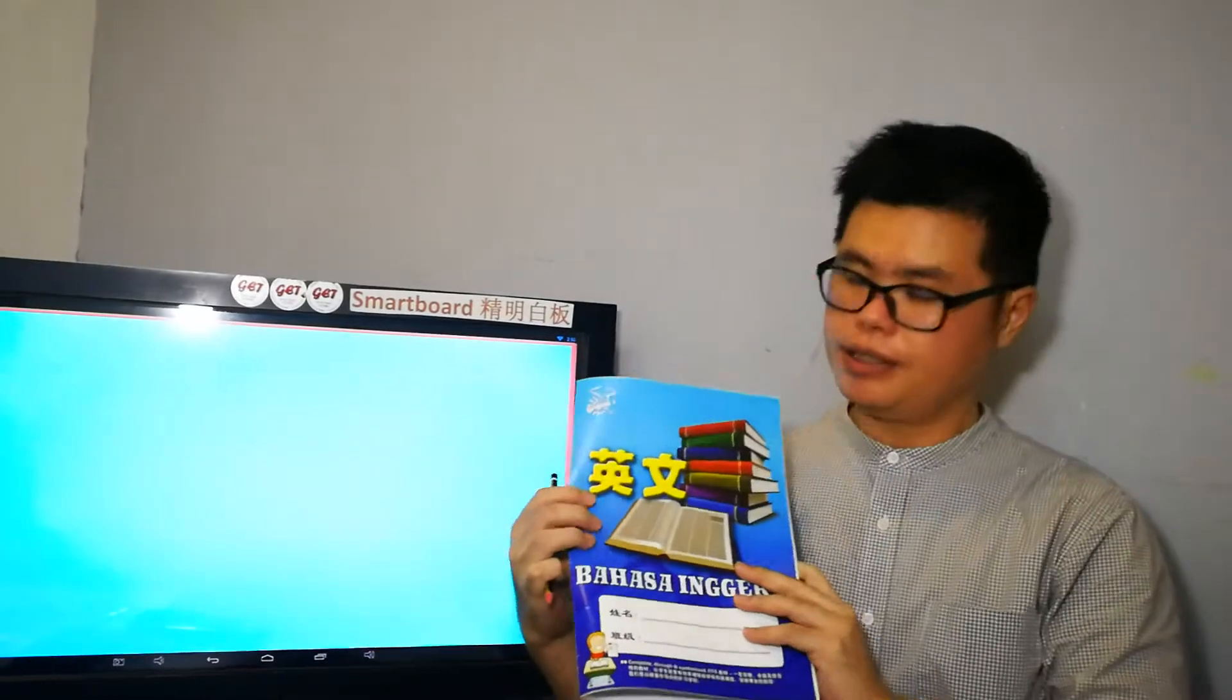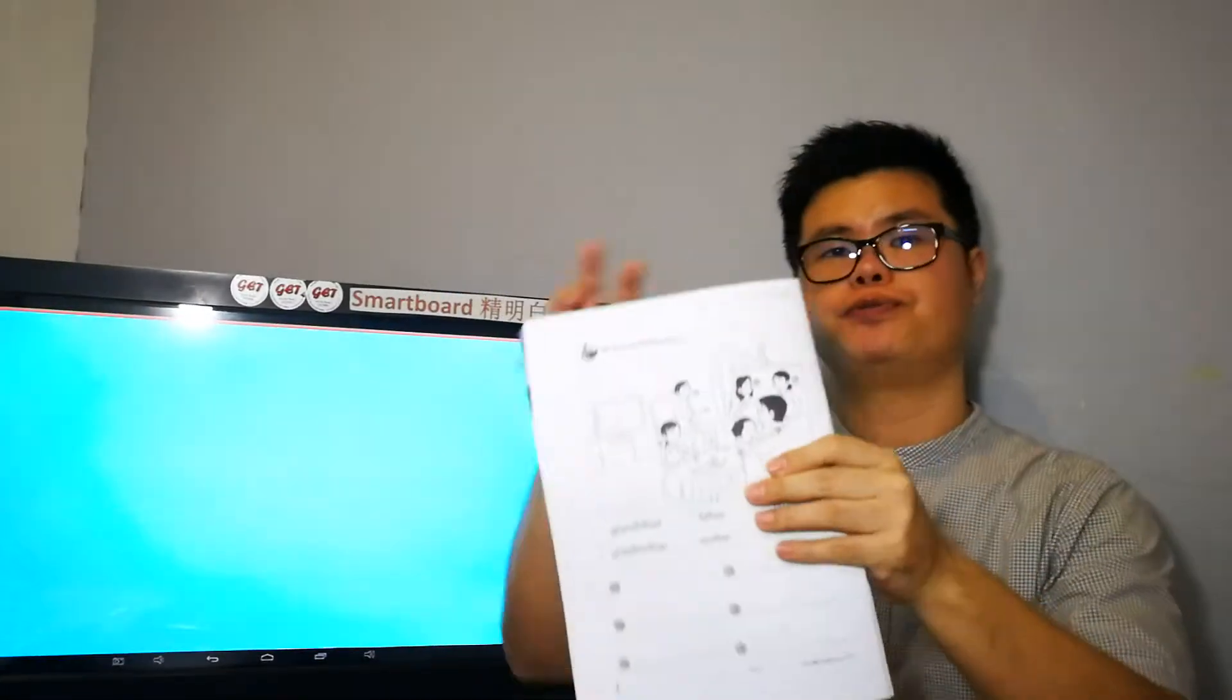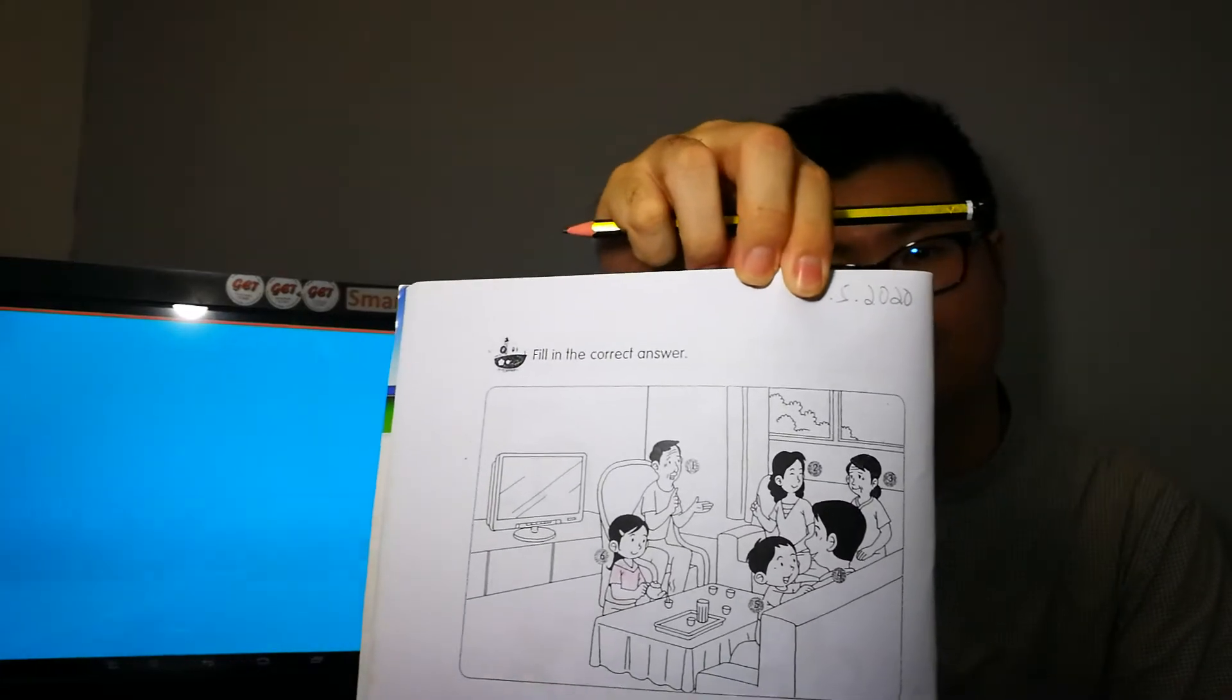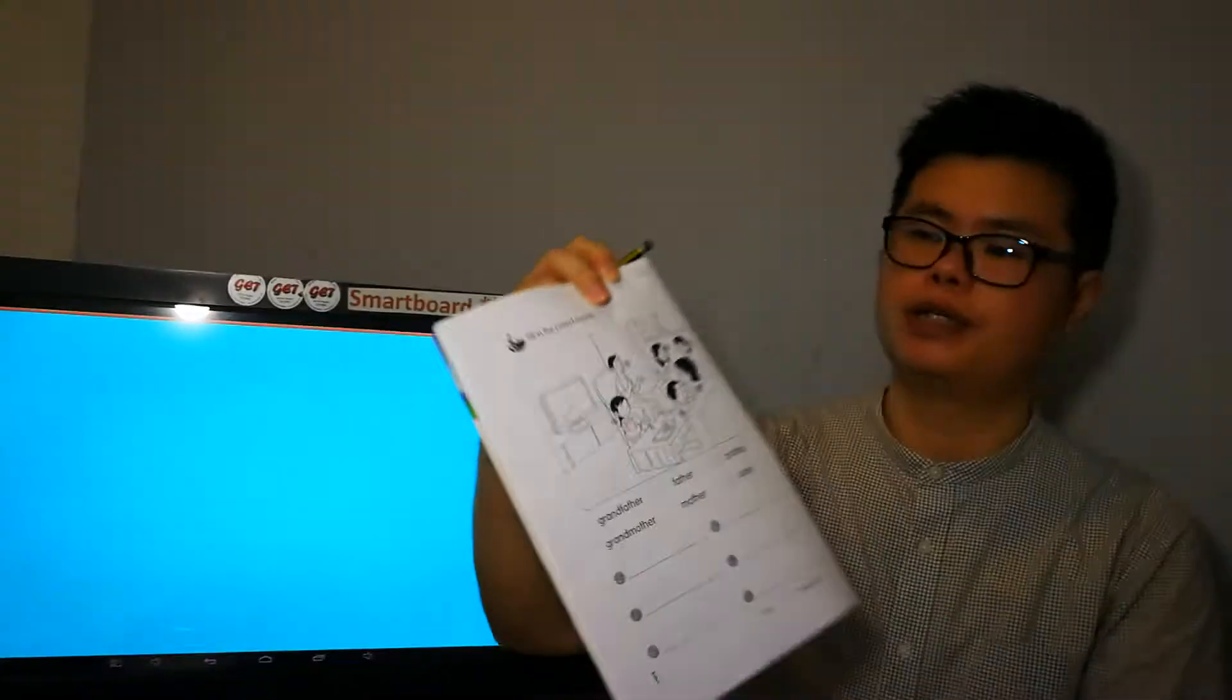Good morning, children. Let us learn English now. Please take out this blue worksheet and turn to page 14. Please write a date, 20th of May 2020. Alright, and today we shall continue yesterday's lesson.